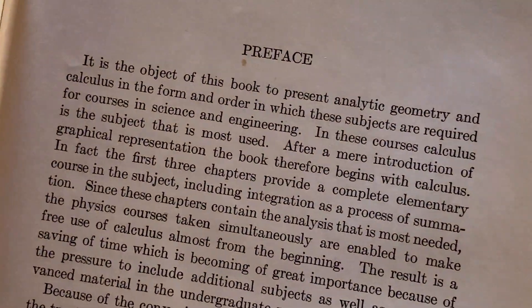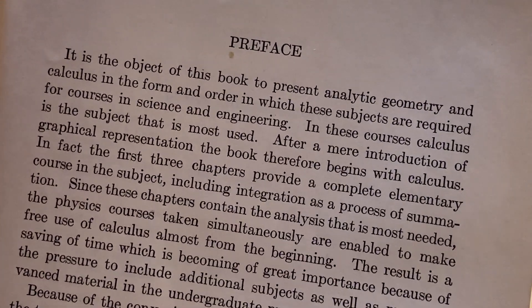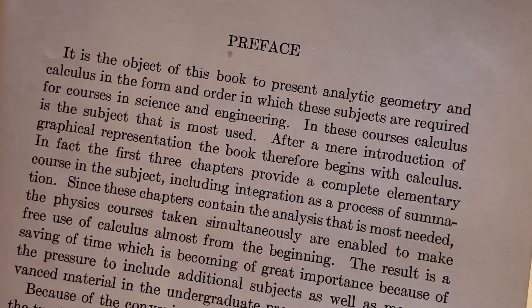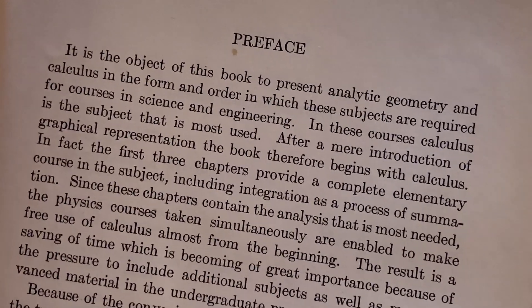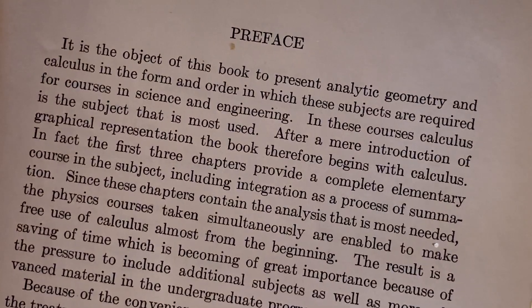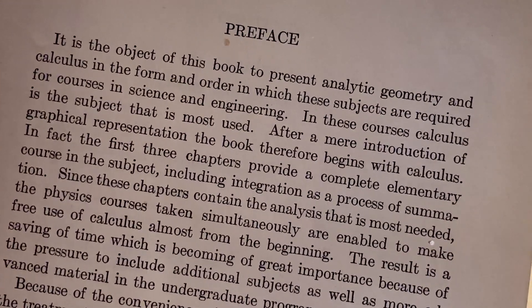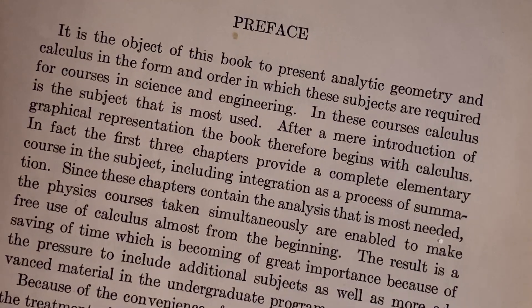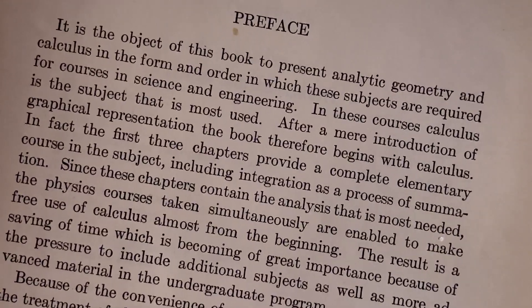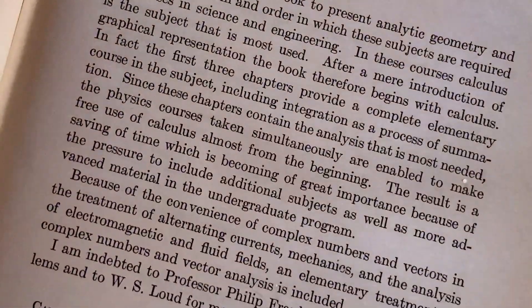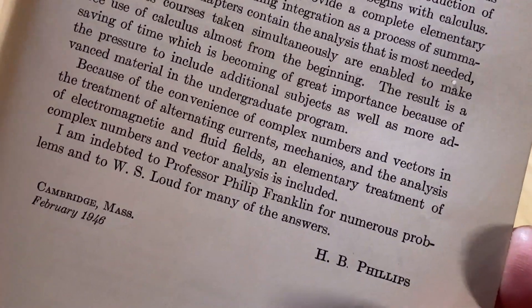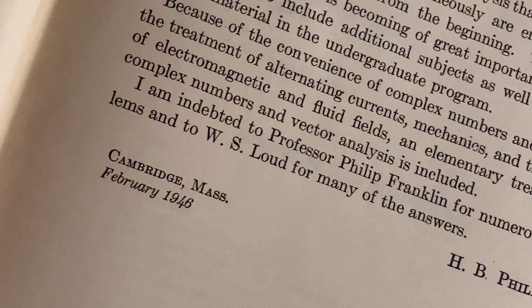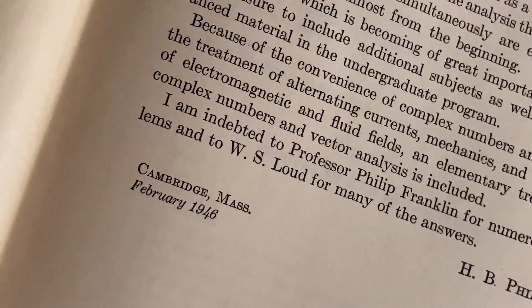Printed in the United States of America. It is the object of this book to present analytic geometry and calculus in the form and order in which these subjects are required for courses in science and engineering. After a mere introduction of graphical representation, the book therefore begins with calculus. In fact, the first three chapters provide a complete elementary course in the subject, including integration as a process of summation. It's signed Cambridge, Massachusetts, February 1946. It's amazing how long ago that was, right? Just like a piece of history.